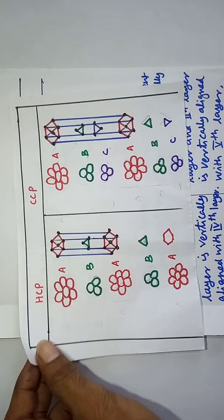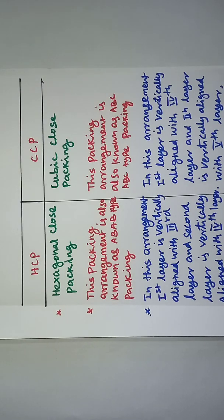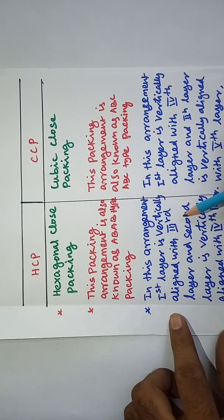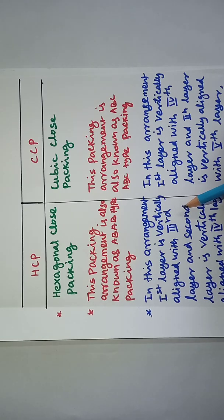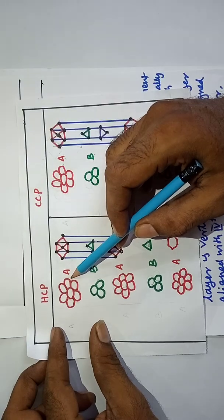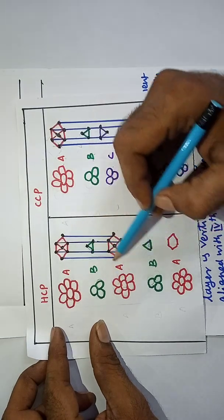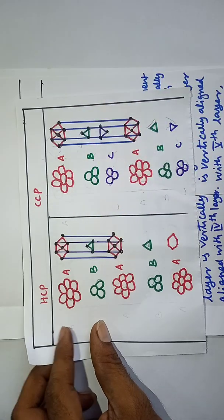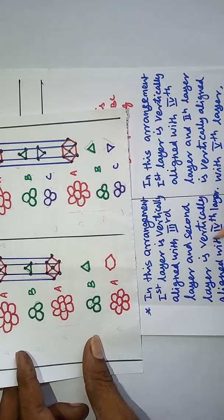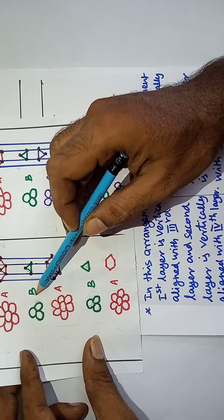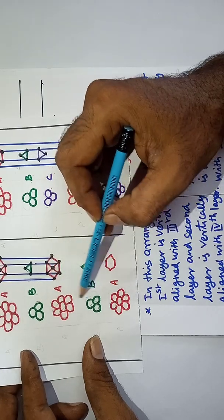In Hexagonal Closed Packing, the first layer is vertically aligned with the third layer. And the second layer is vertically aligned with the fourth layer.